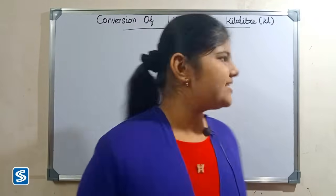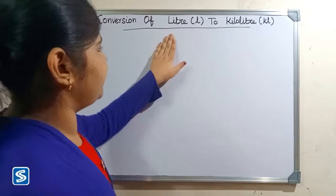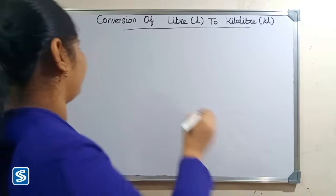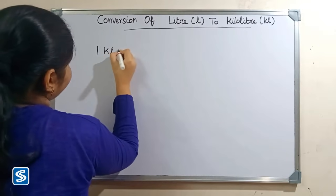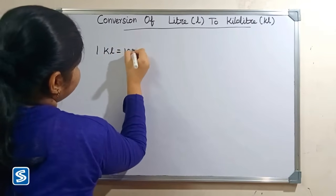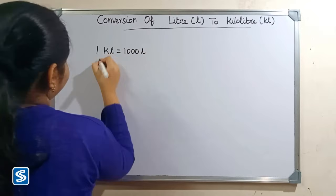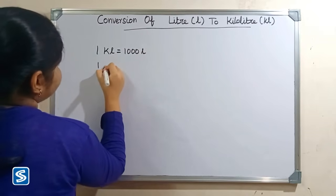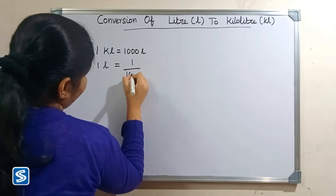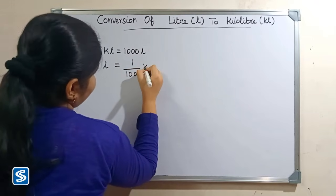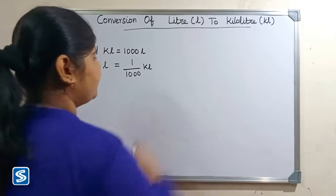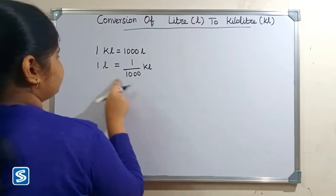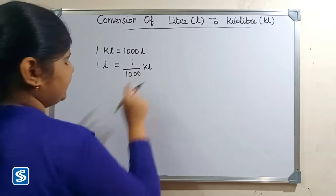Hi friends, welcome to Samish channel. In this video I'm going to teach how to convert liters into kiloliters. We already know that one kiloliter is equal to one thousand liters, so one liter is equal to one by one thousand kiloliters. The formula for converting liters into kiloliters is: one liter equals one by 1000 kiloliters.